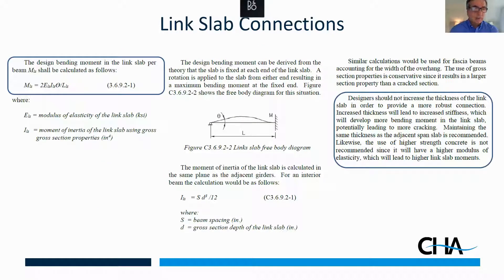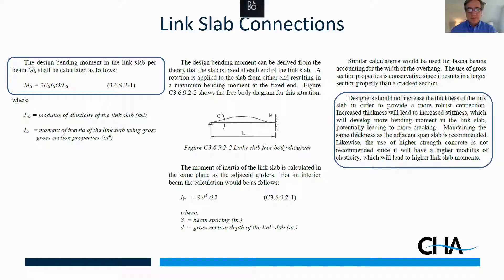The moment in the link slab is given by: M = 2EIθ/L, where L is the length of the link slab, θ is the rotation, and E and I are the modulus of elasticity and moment of inertia of the link slab. Importantly, I = SD³/12. Since D appears as a cubic term, thickening the link slab significantly increases the bending moment — doubling the thickness increases stiffness by a factor of eight and therefore the bending moment by a factor of eight. Similarly, using high-strength concrete increases the modulus of elasticity, also increasing the bending moment. We recommend keeping the thickness of the link slab equal to that of the approach decks on either side.